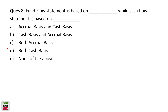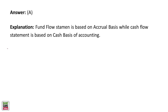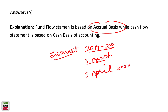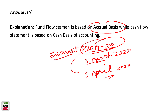Fund flow statement is based on the accrual basis while the cash flow statement is based on the cash basis. For example, interest accrued for 2019-2020 on 31st March but received on 5th April 2020 belongs to the previous financial year under accrual basis — that is where it must be recorded. Cash basis simply records when you receive the money. That is the key difference between accrual basis and cash basis.